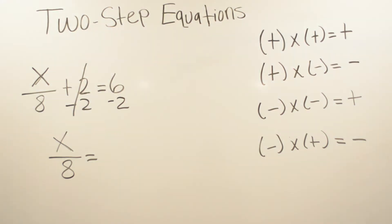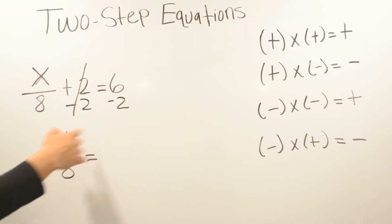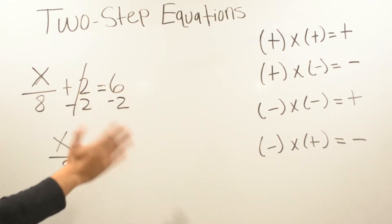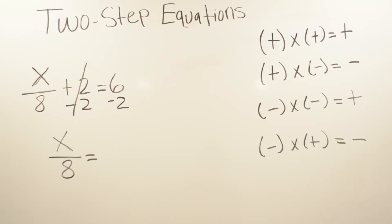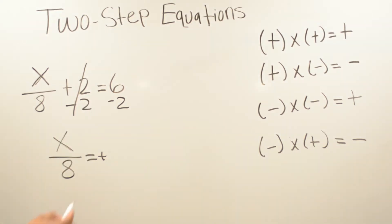When you're adding and subtracting and you have two different signs, you're going to subtract. When you have two of the same signs — if it's positive and positive, you're going to add; if you have two negatives, you're going to add and your answer should be a negative. But in this case we have six, which is positive, and negative two, so we subtract. I look at which number is bigger: six or two — it's six, so the answer is going to be positive. Six minus two is going to be four.